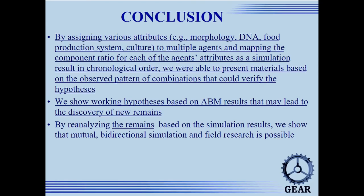Conclusion. By assigning attributes such as morphology, DNA, food production method, and culture to multiple agents, and simulating the component ratio for each attribute as a function of time, we were able to present materials based on the observed pattern of combination that could verify the hypothesis. We showed working hypotheses based on ABM results that may lead to the discovery of new remains. By analyzing the remains based on the simulation results, we showed that bi-directional simulation and field research is possible.